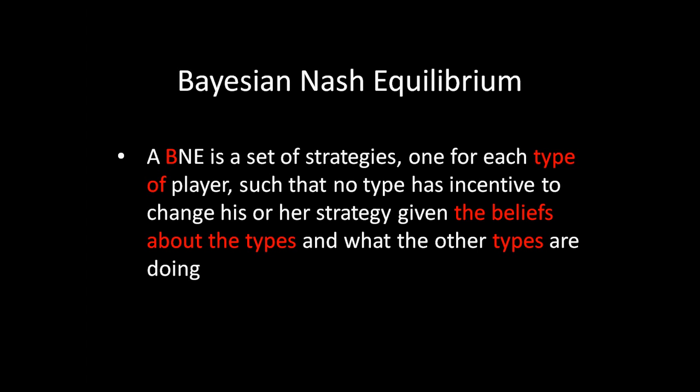So instead of looking for profitable deviations for each player, we're now looking for profitable deviations for each type of player. The strategies we hold constant aren't a strategy for each player, but rather a strategy for each type of player. We're also using beliefs about the types to calculate the relative likelihood of facing each one when looking for profitable deviations.